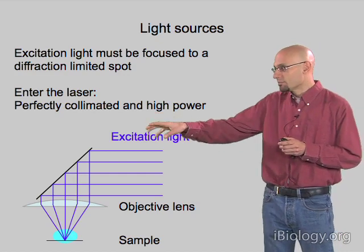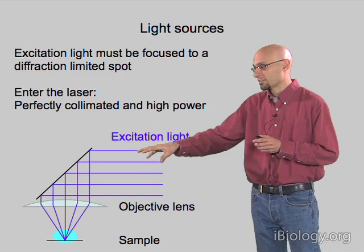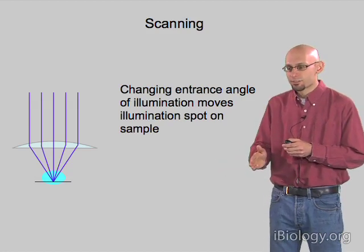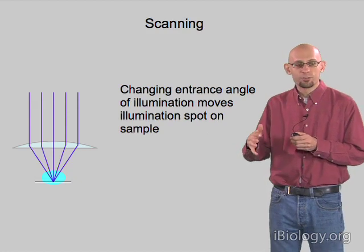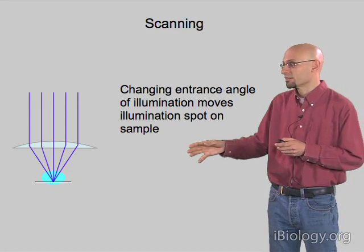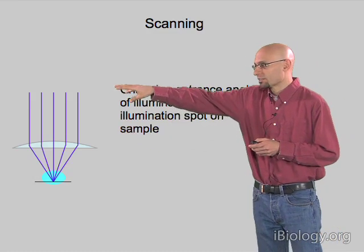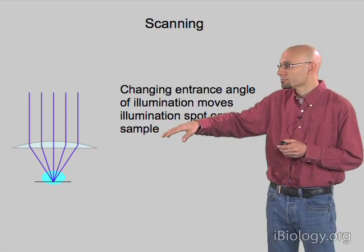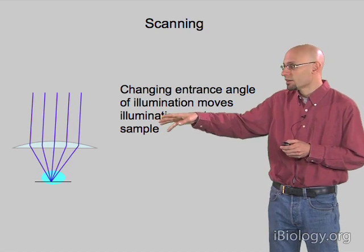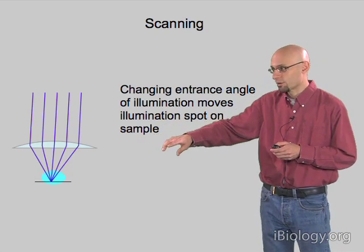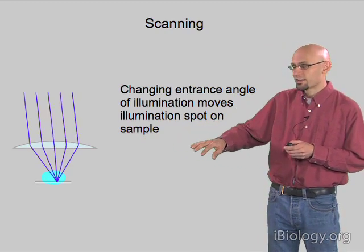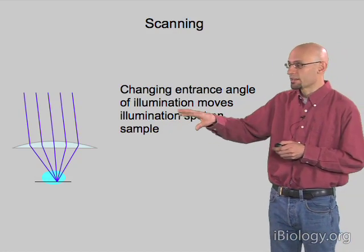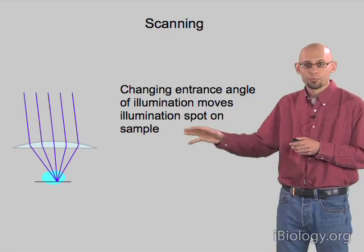A collimated beam gives us a single focal point in the sample. To move that spot across the sample, we can change the angle of illumination as it enters the objective. If light comes in perpendicular to the objective plane, it focuses exactly at the center of the field of view. If we tilt that beam, we move the focal spot off axis, so we can record from the left side of the sample. If we change the angle to the other orientation, we record from the right side. By changing the angle of illumination, we can move the illumination spot across the sample.